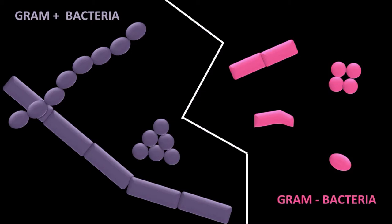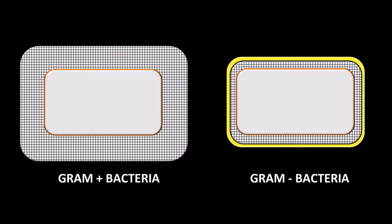Why do some bacteria appear purple while others appear pink after gram staining? Quite simply because these bacteria don't have the same wall. The principle of this staining is therefore based on a difference in the cell wall constituents between these two groups of bacteria.